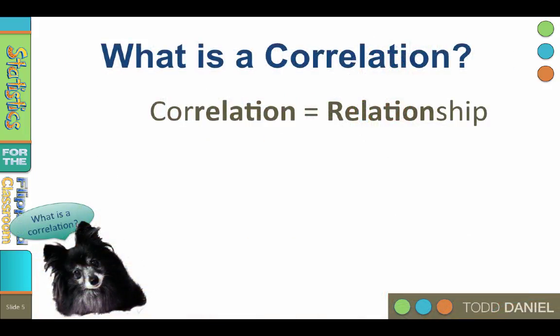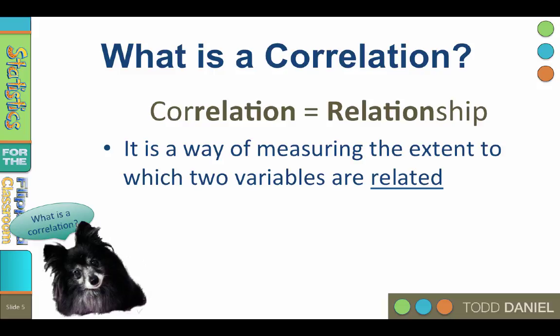The term correlation is synonymous with relationship. In fact, when you hear correlation, you should think relationship. In the same way, when you hear regression, you should think prediction. Correlation and regression are closely linked, and we will talk more about regression in the next unit. Correlation is a way of measuring the extent to which two variables are related.